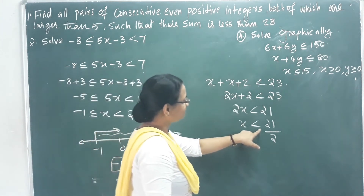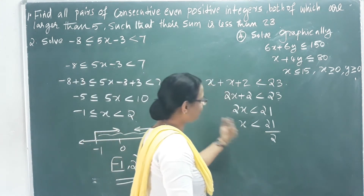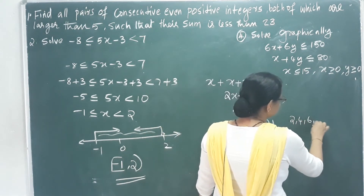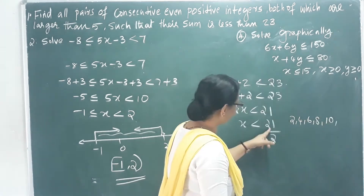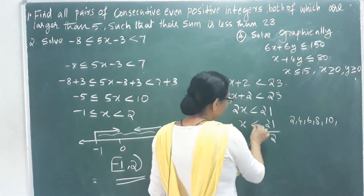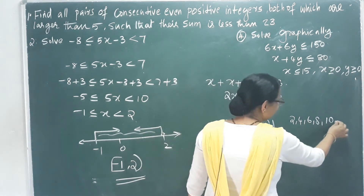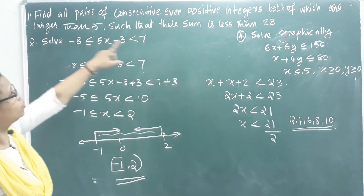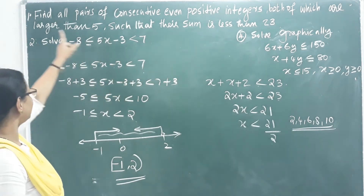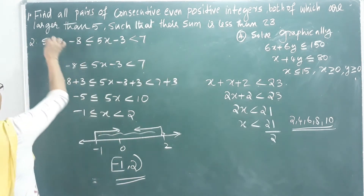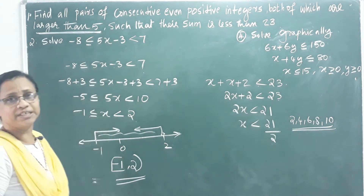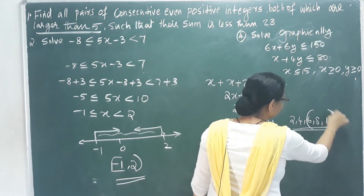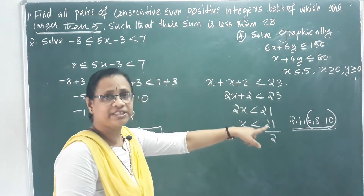So 2x plus 2 less than 23 gives 2x less than 21, meaning x less than 21 by 2, which is 10.5. The even positive integers larger than 5 and less than 10.5 are: 6, 8, and 10. So the consecutive even integer pairs are (6,8), (8,10), and (10,12).